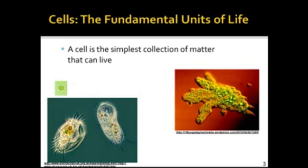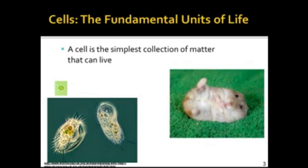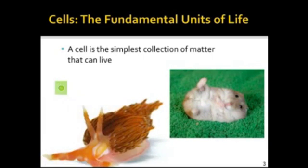Some organisms are only made up of a single cell, like this cyanobacteria in green in the top left, or this amoeba over to the right, or these strange-looking protists in the bottom left. Other organisms are made up of more cells, like this adorable hamster and this stunning sea slug.